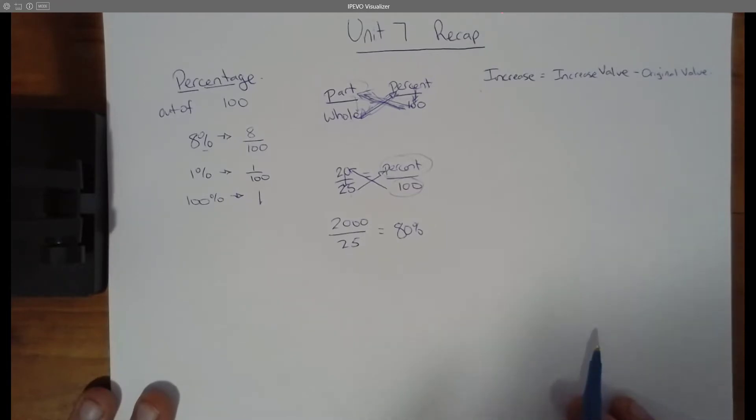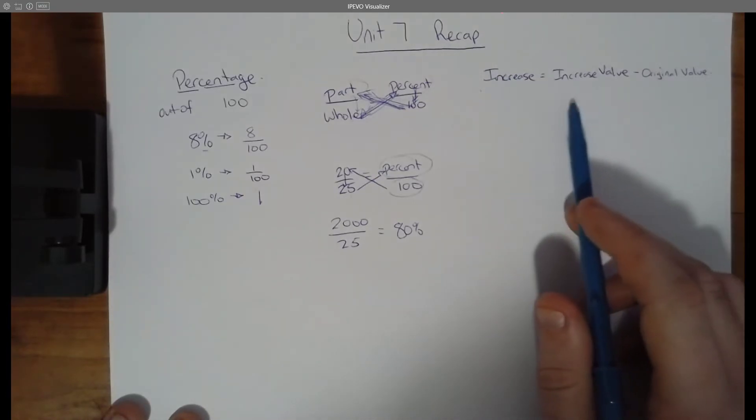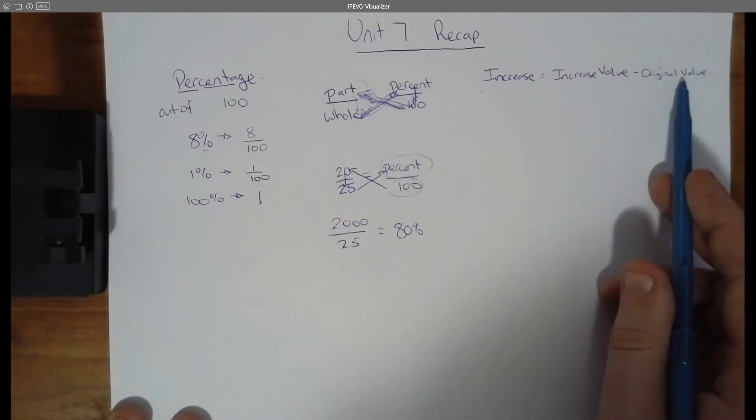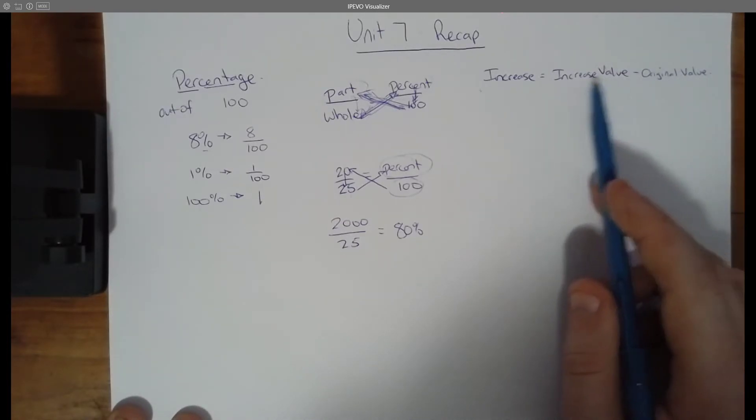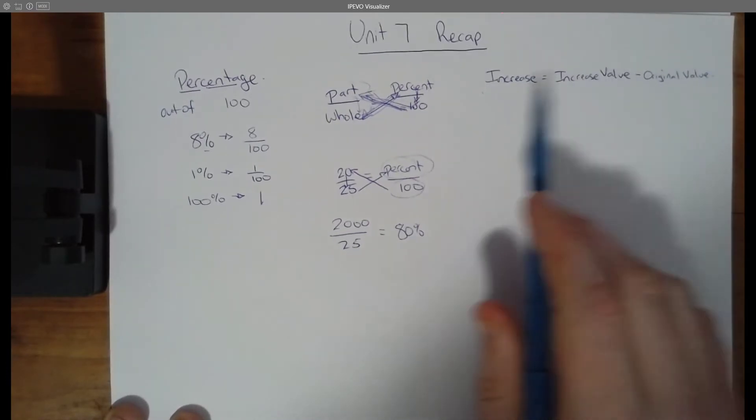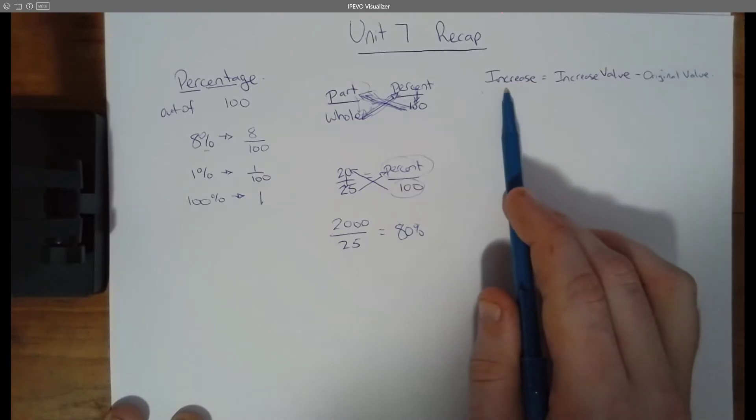So what that just means is that if you want to figure out how much something went up by, let's say, for example, that toilet paper. Everybody wants toilet paper right now. And so you go to the store and now it costs you $30 for toilet paper. It used to cost you $20. So $30, the increased value, minus $20, the original value, gives you an increase in price of $10.